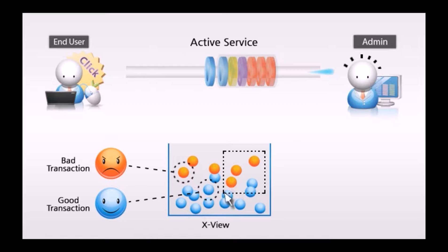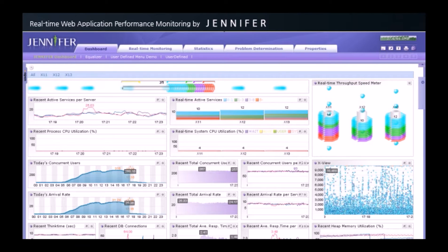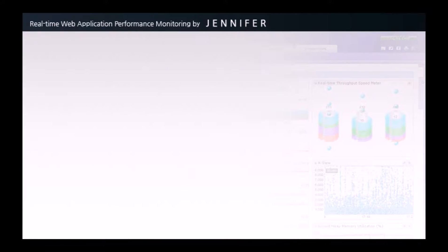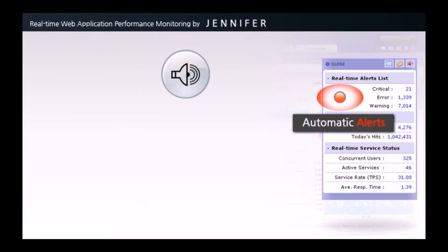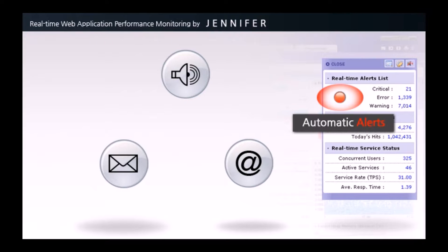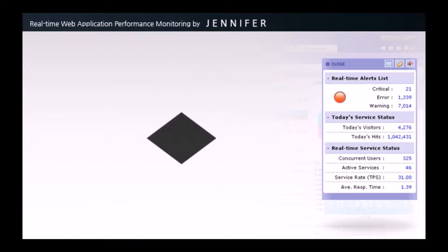Jennifer is very helpful in identifying the root cause of the performance problem and even suggests resolutions. As an advanced performance detection tool, Jennifer is capable of sending out automatic alerts to users and administrators via email or SMS, so that the alert can be expeditiously sent to appropriate personnel for speedy problem diagnosis and resolution recommendations.